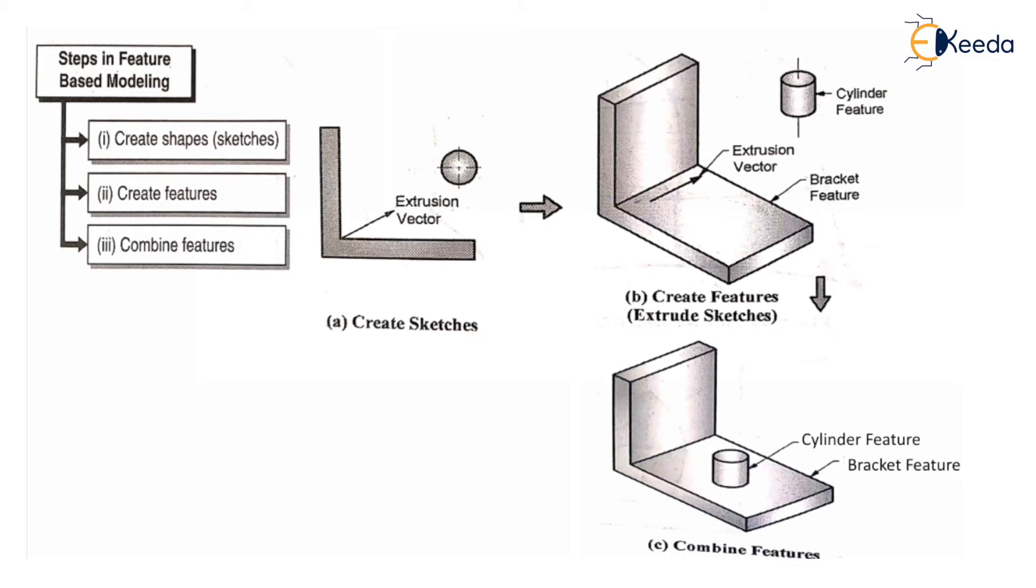How are we creating the shape? For example, in this example, there is an extrusion vector. Similarly, for circles, there's also a separate extrusion vector. There is an L shape that we can draw in a sketcher, and then we have to extrude it. After extruding, it will convert that L shape into an L-shaped bracket.